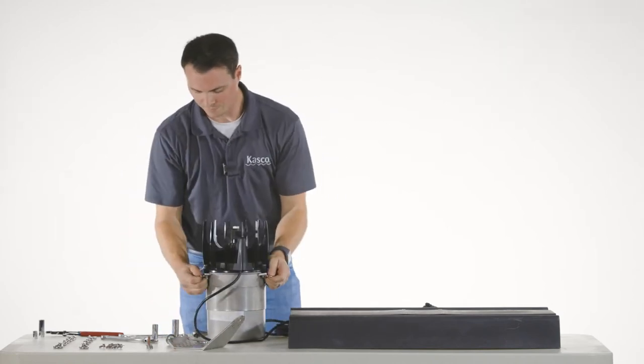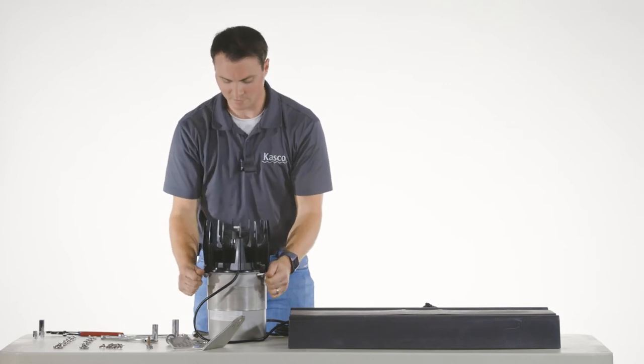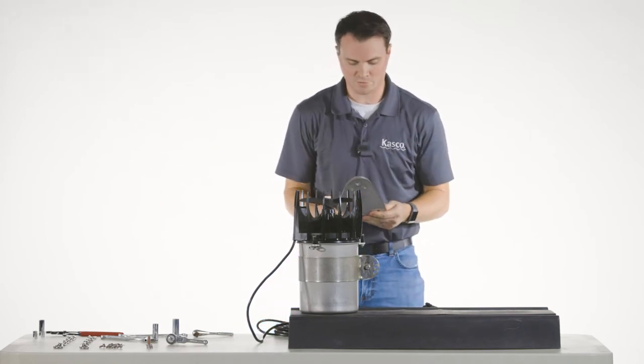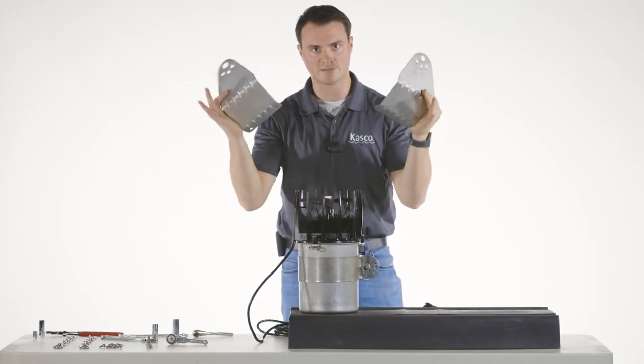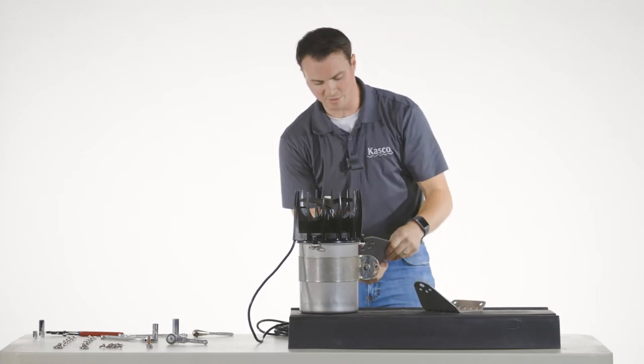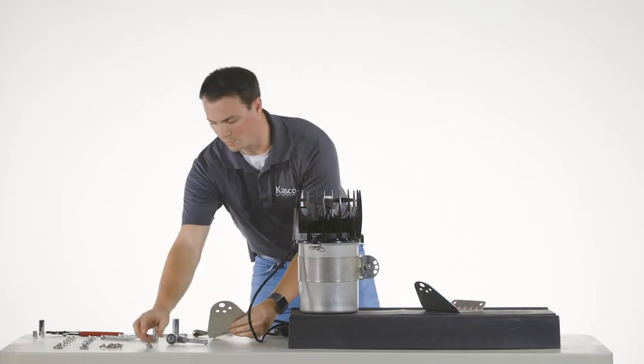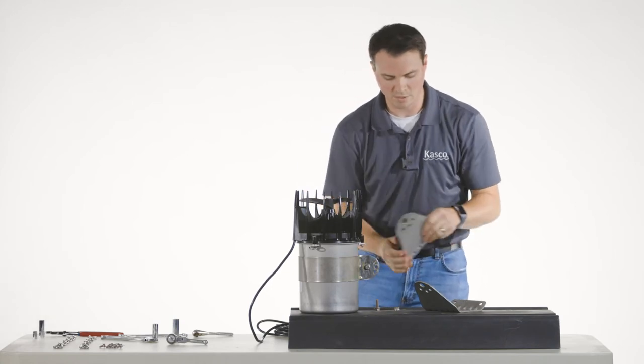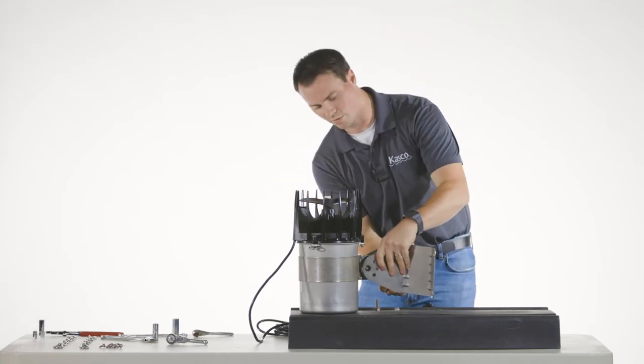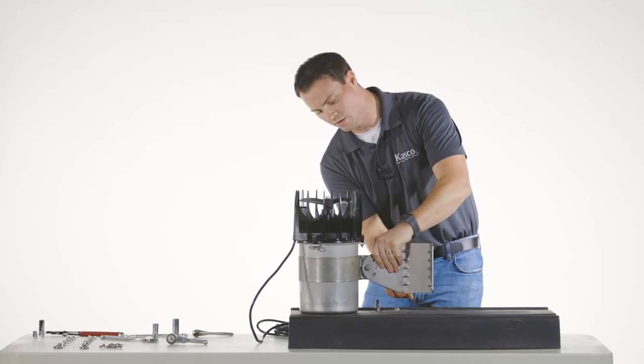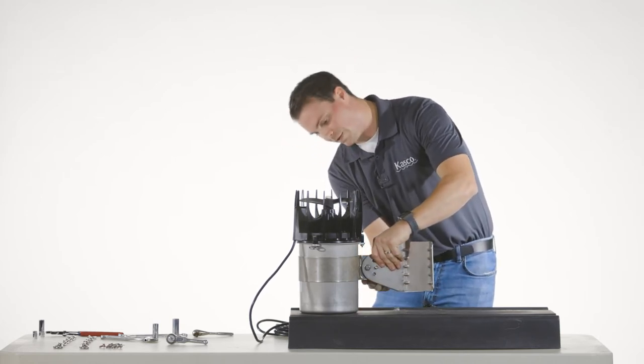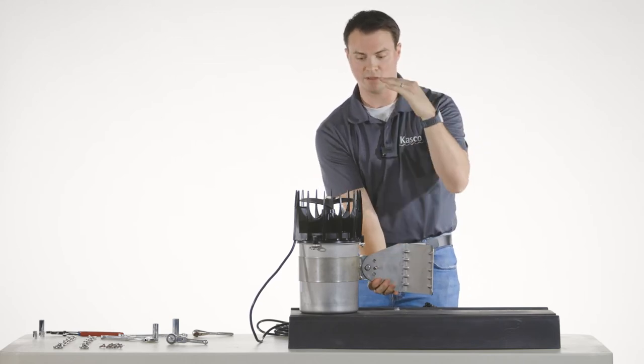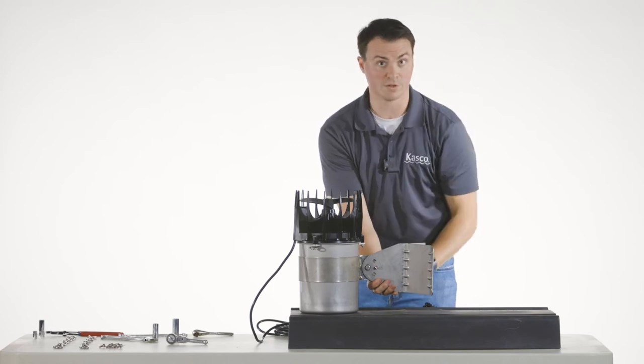So once you have your tie downs set, next would be taking your two horizontal float brackets and it'll be mounting those with your serrated flanged bolt and nut. So one horizontal bracket will go on each side of the can strap sandwiching that flange and this is where the customer is going to need to know which angle that they want to keep the unit facing when on the horizontal float.